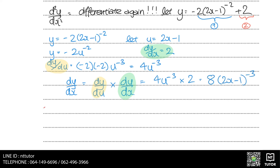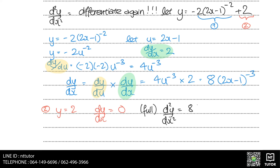For the second part, y equals 2, so dy over dx is just 0. Therefore, the full d squared y over dx squared is 8 multiplied by 2x minus 1 to the power of minus 3.